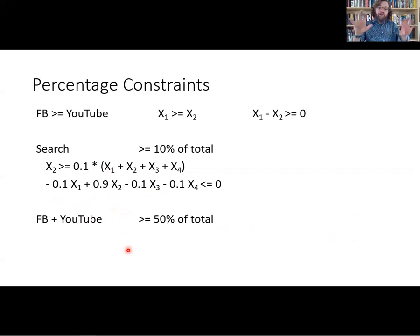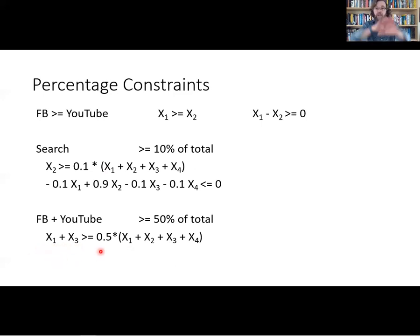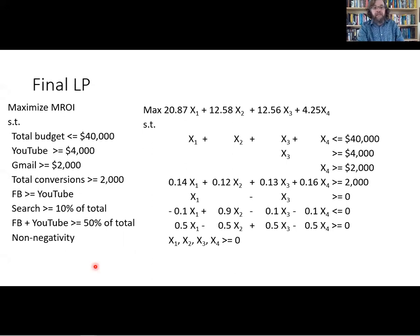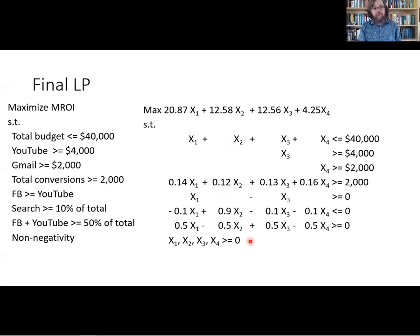The constraint that Facebook plus YouTube together must be at least 50% of total spending is handled the same way. We say X1 + X3 ≥ 0.5·(X1 + X2 + X3 + X4), then subtract the right side from the left. This yields 0.5·X1 − 0.5·X2 + 0.5·X3 − 0.5·X4 ≥ 0. This gives us the final form of the linear program. We also require non-negativity — none of the variables can be negative, since spending a negative amount makes no sense.